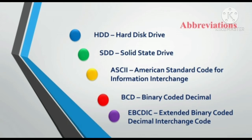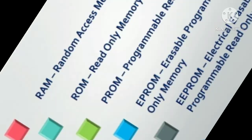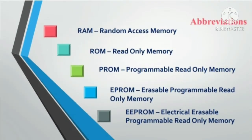In the upcoming videos, we will be discussing about ASCII, BCD, and EBCDIC. Now we will see some of the abbreviations which come in the memory part. RAM: Random Access Memory. ROM: Read Only Memory. PROM: Programmable Read Only Memory. EPROM: Erasable Programmable Read Only Memory. EEPROM: Electrical Erasable Programmable Read Only Memory.